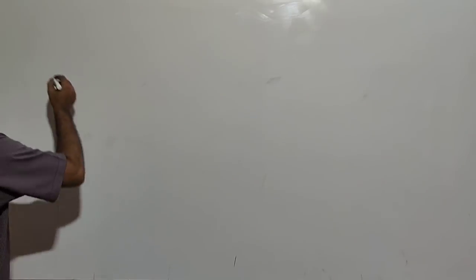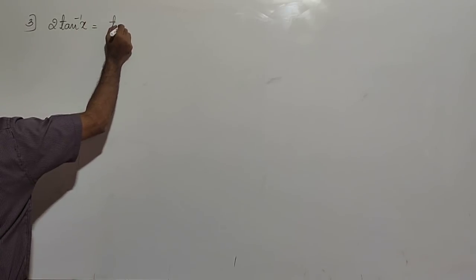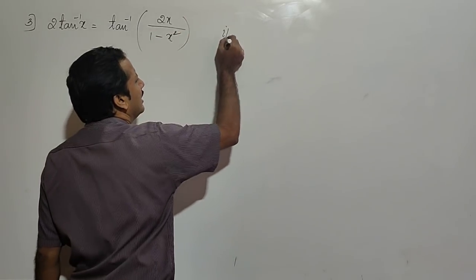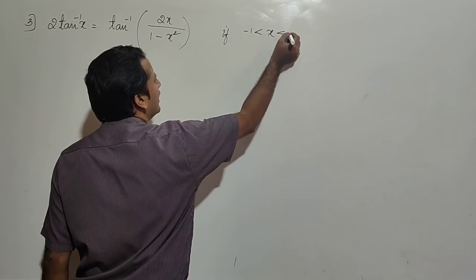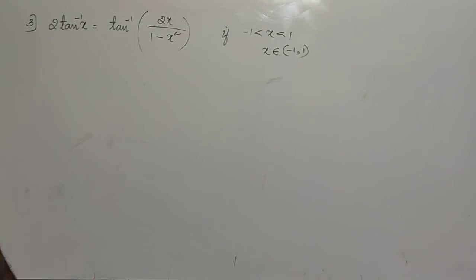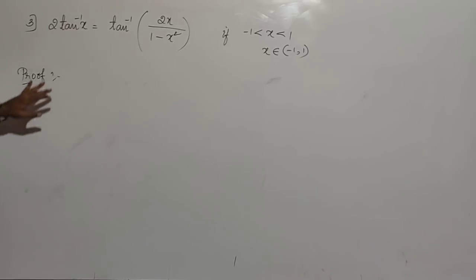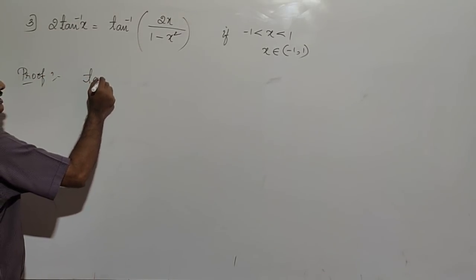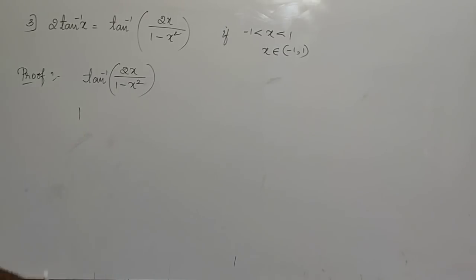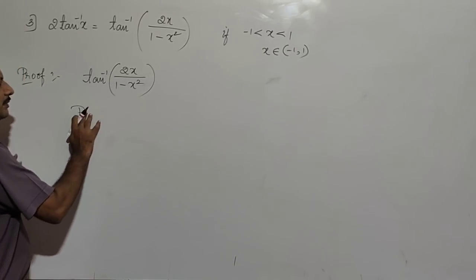The next result is: 2 tan⁻¹(x) = tan⁻¹(2x/(1-x²)), when x belongs to the open interval (-1, 1). The proof is very similar to the earlier proofs. Here also, we consider the RHS, which is tan⁻¹(2x/(1-x²)). We make the same substitution: put x = tan θ.